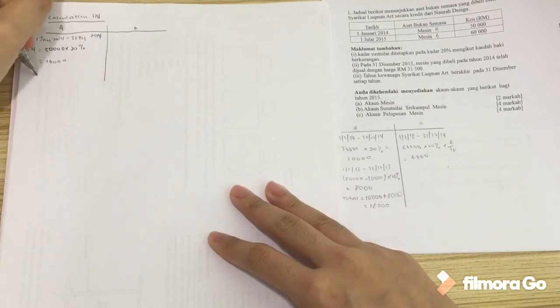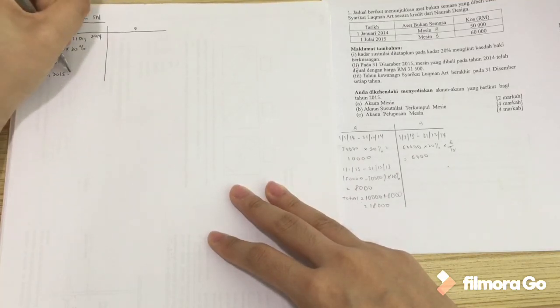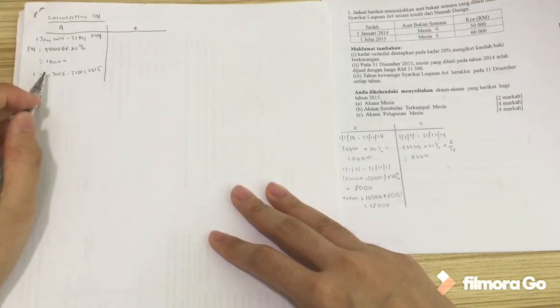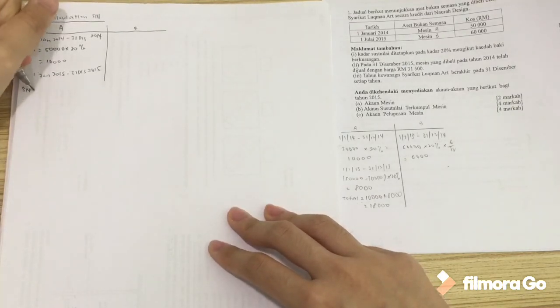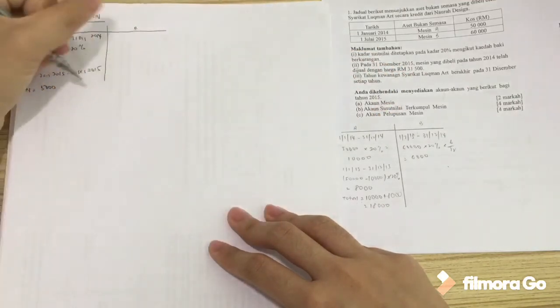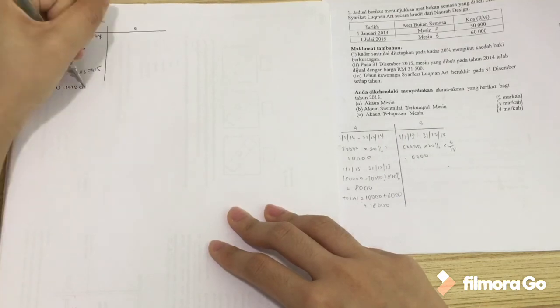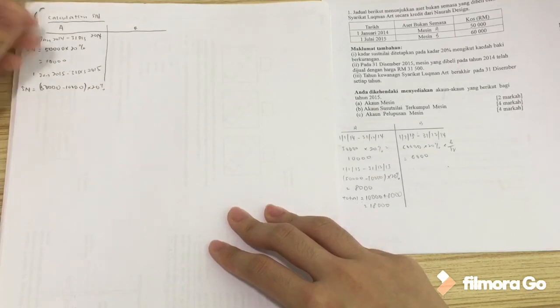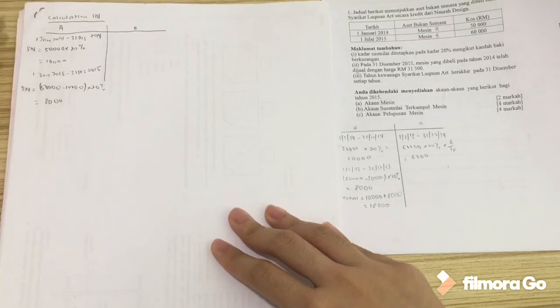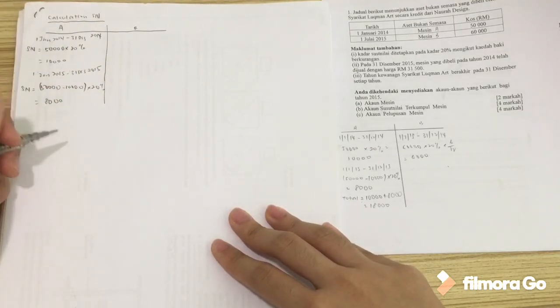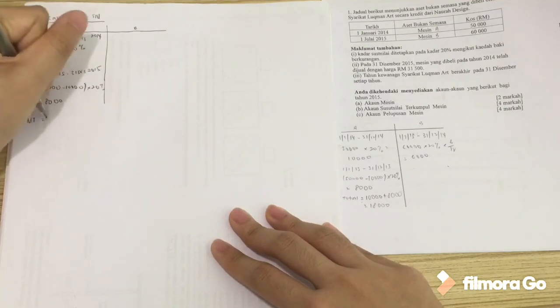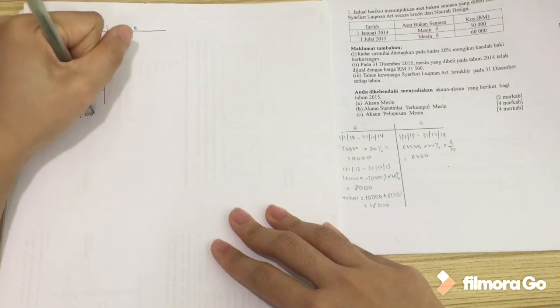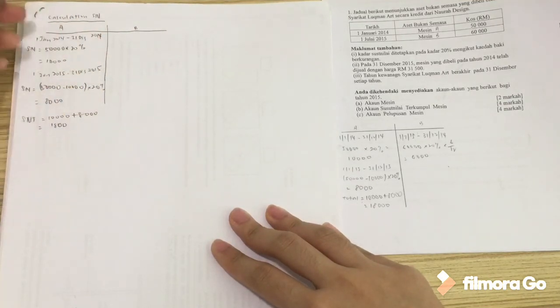Now we're going to count for the year of 2015, 31st of December. Now we have our susut nilai already, right? This is our susut nilai terkumpul for the year of 2015. We have to minus it first because baki berkurangan. 50,000 minus 10,000 then times with 20%. The answer is 8,000. So the total susut nilai for our machine A, susut nilai terkumpul for all the years is 10,000 plus 8,000, we get 18,000.